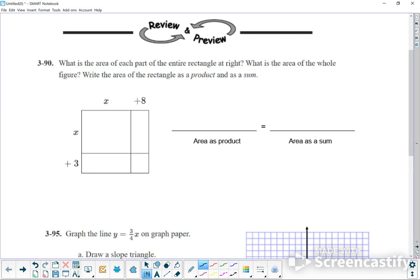So this is exactly what we've been going through in class. Just basically fill out your area model. X times X is X squared. X times 8 is 8X. X times 3 is 3X. And 3 times 8 is 24.